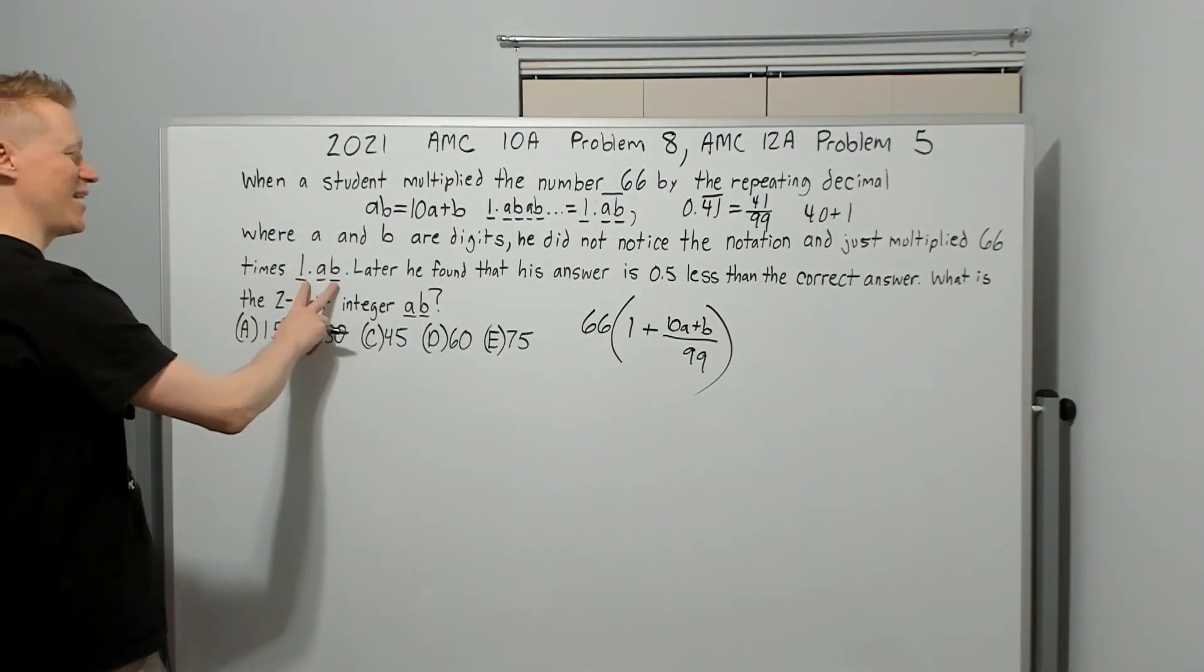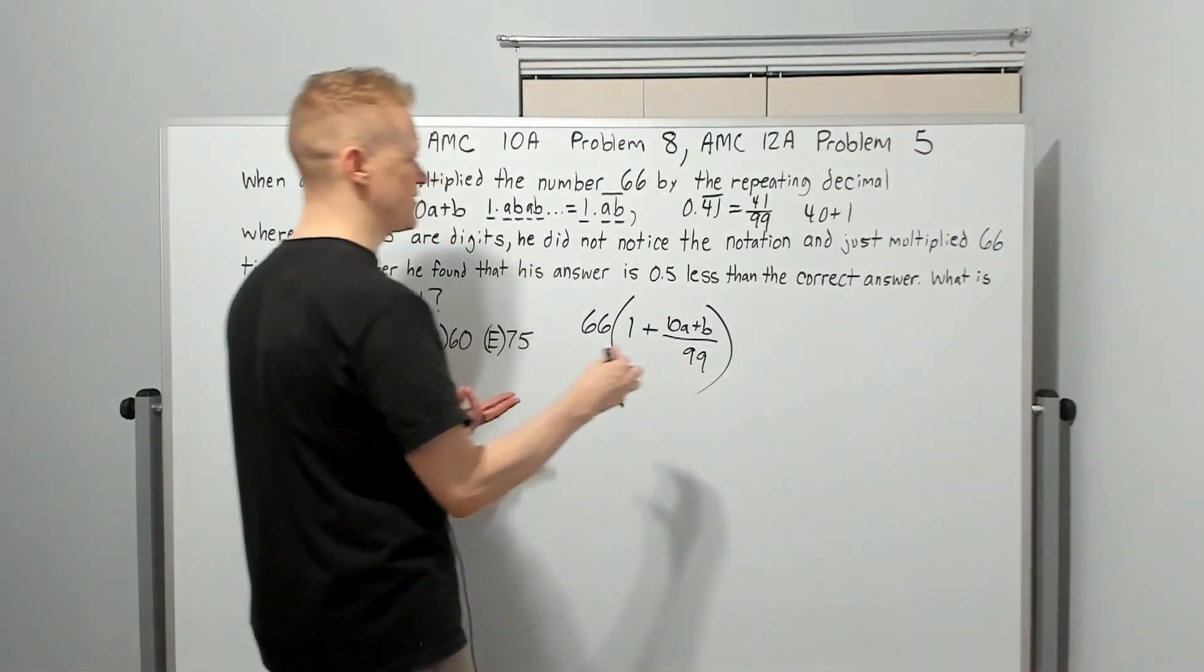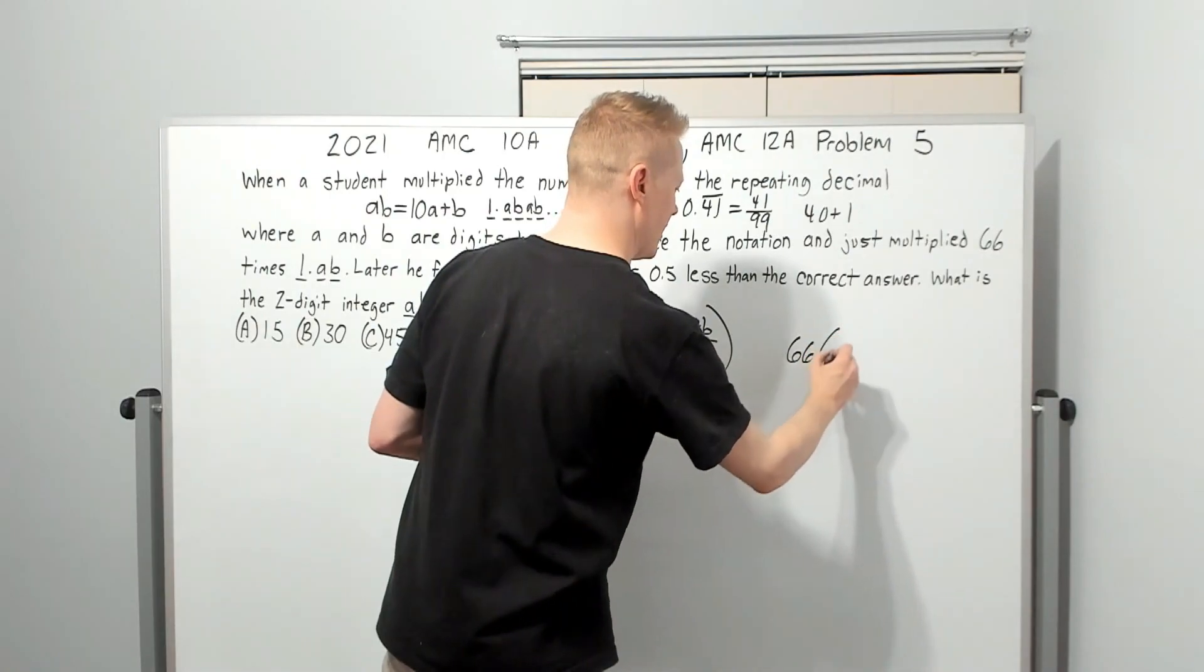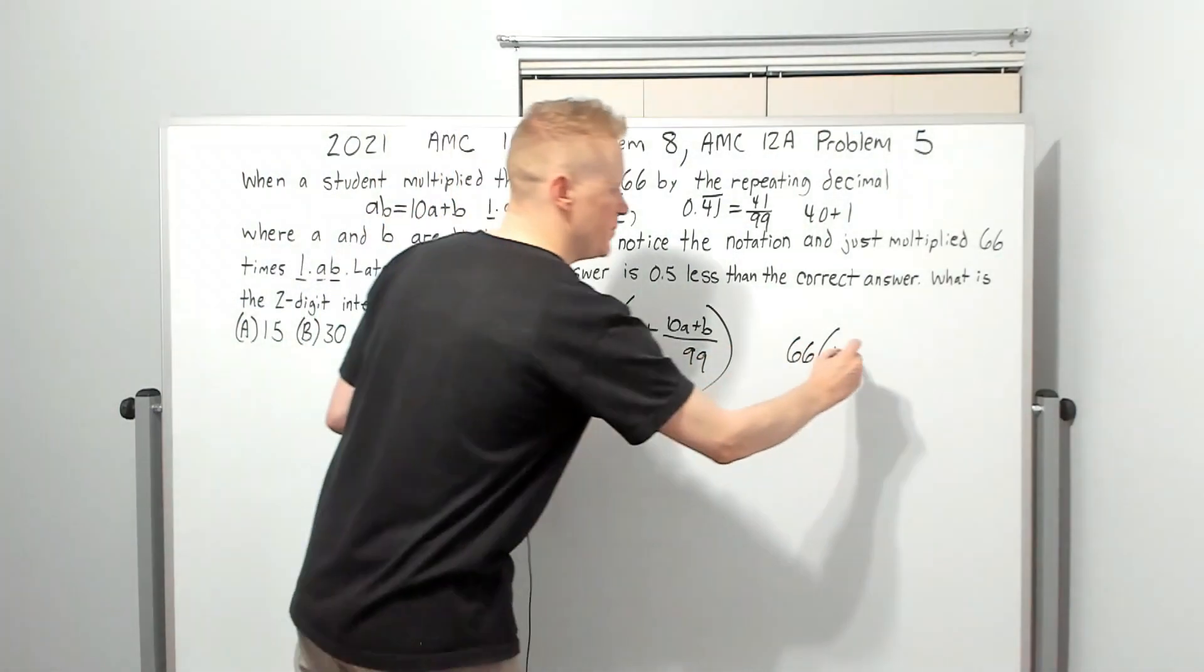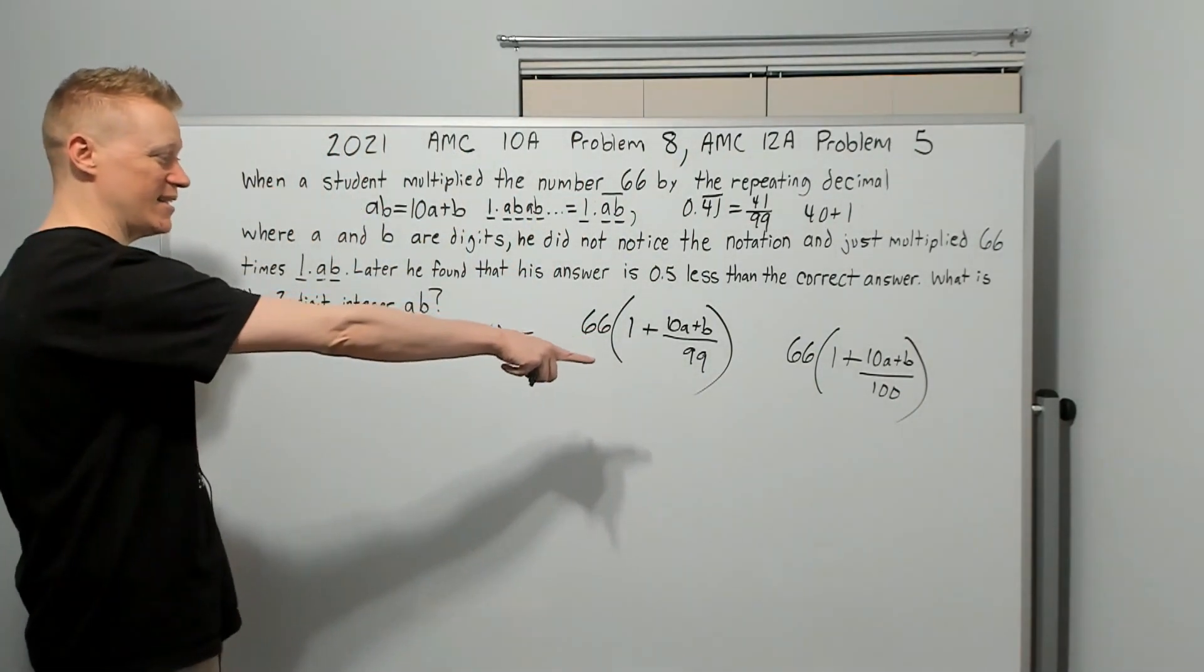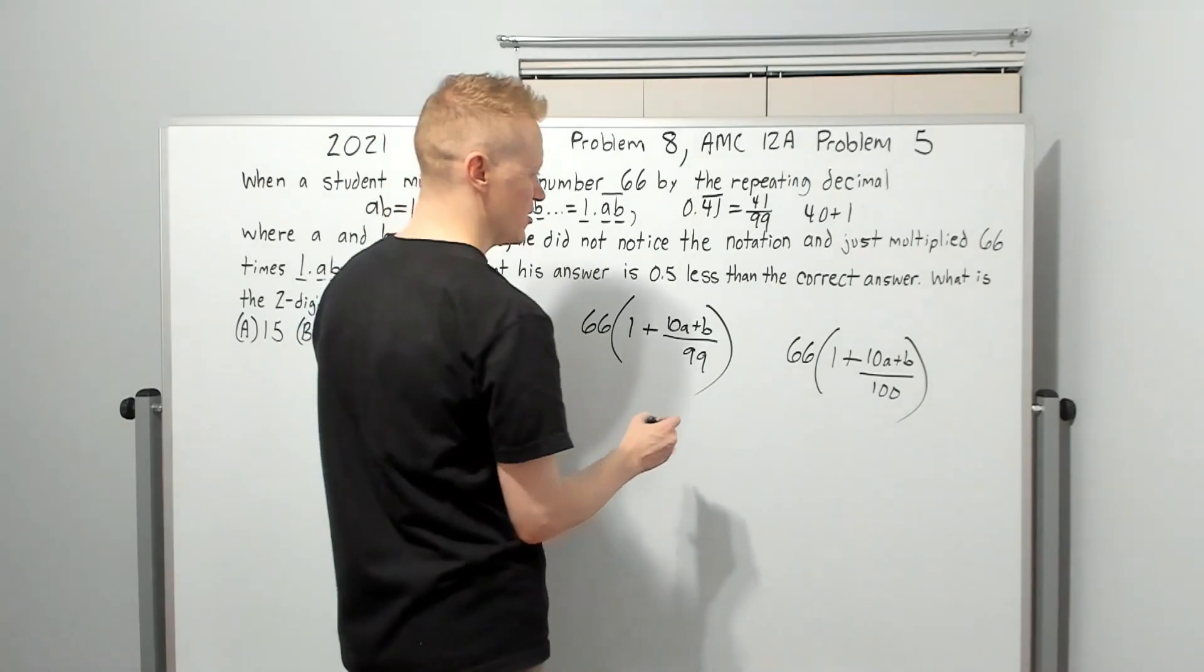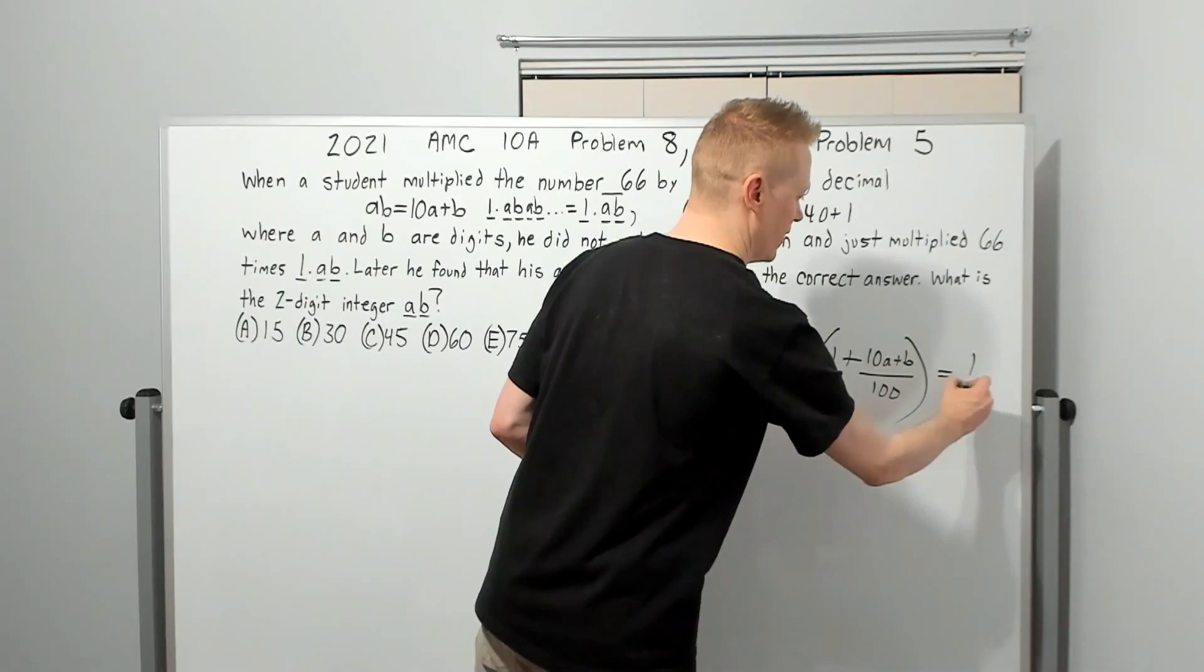He did not notice, just multiplied 66 times this. So it's going to be 66 times 1 plus, what's point AB? Well, it's just hundredths. So it's going to be 10A plus B over 100. That's what he did. This is what he was supposed to do. Later, he found that his answer is 0.5 less than the correct answer. So this subtracted from this is going to be 1 half.